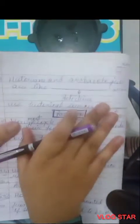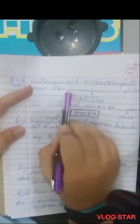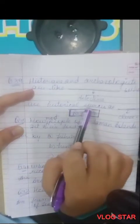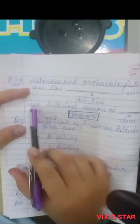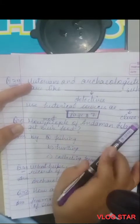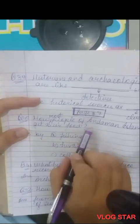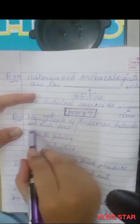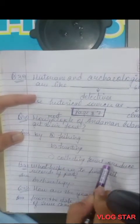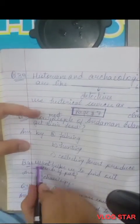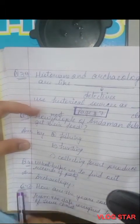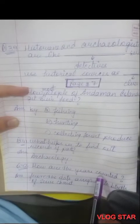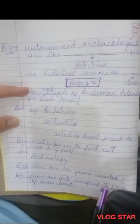Define language — when we read what is written or when we speak, it is called language. In what form do burnt wood and burnt seeds of grain survive? In a charred form. Define historians — they are the scholars who study the past. True or false: learning about the past is adventurous — it is true. Historians and archaeologists are like detectives who use historical sources as clues.